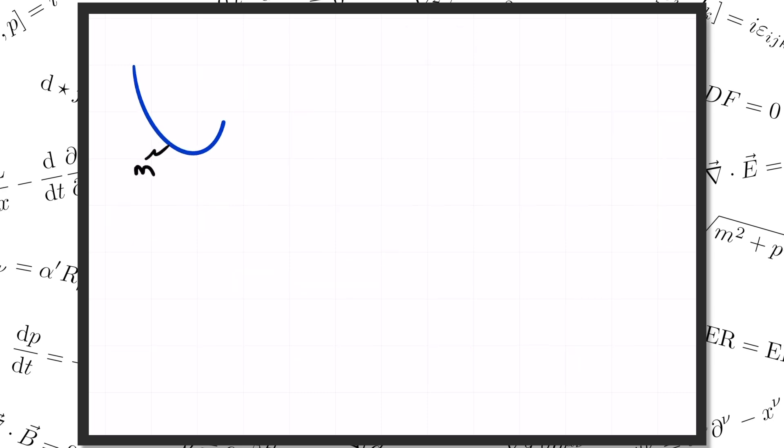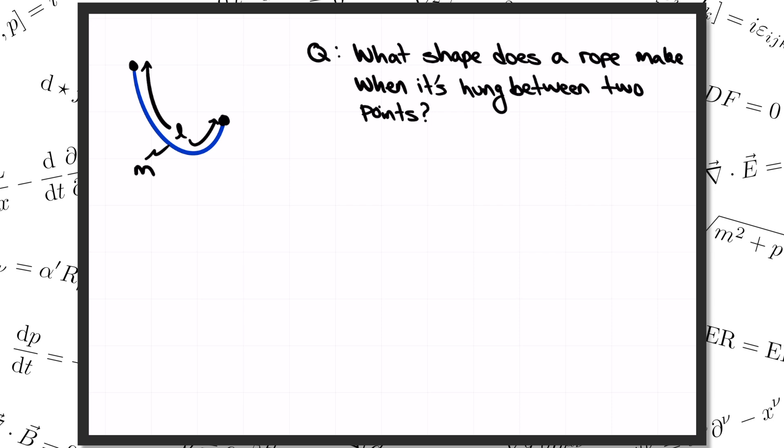So, say we have a rope of mass m and length l, and the two ends of the rope are pinned at some given points. Then the question is, what shape is the rope going to make as it hangs between these two points? To answer this question, we're going to imagine slicing up our rope into many little pieces. Since the rope is at rest, the total force acting on each piece has got to be zero. Imposing that condition will tell us the shape that the whole rope has got to take.